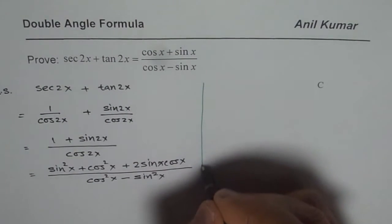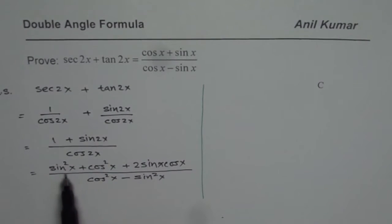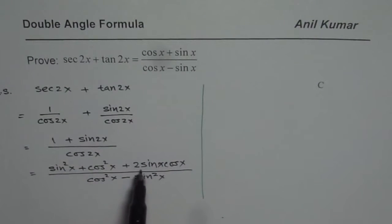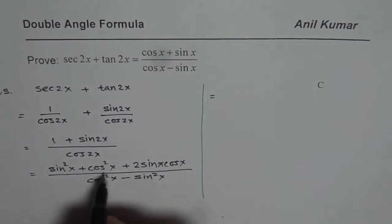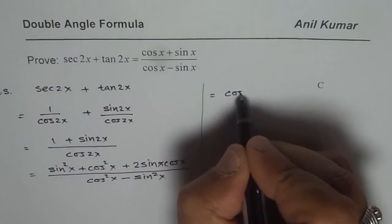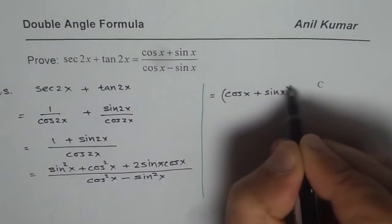Now the numerator can be written as a plus b whole square. So let me rewrite this so that you clearly get this. We can write this as cos x plus sin x whole square.